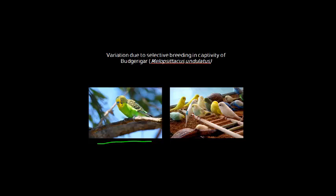There is also variation that exists between males and females within a population. Some of this is obviously observable, and we call that dimorphic. The word dimorphic means that the variation is observable. We can see this even in the budgerigar, where the nasal area is a different colour in the male compared to a female. Male birds are sometimes more brightly coloured than the female, and sometimes they're larger, and we can see the same thing occurring in different species of animals.